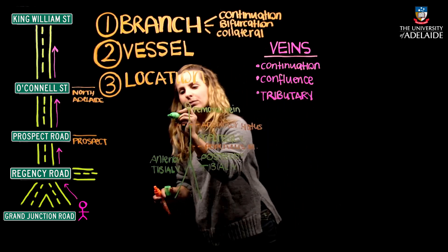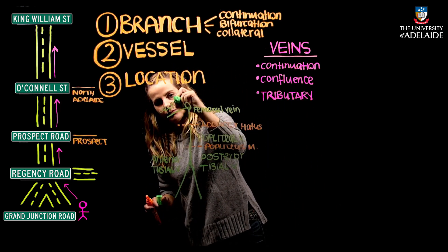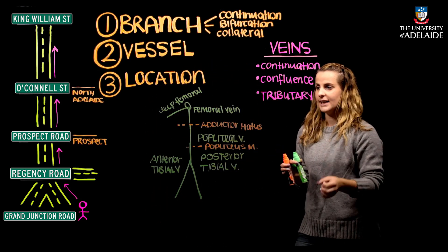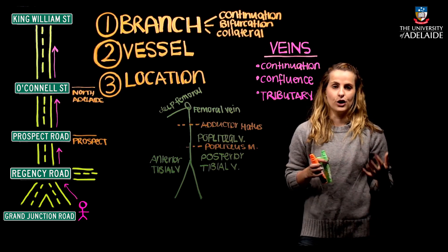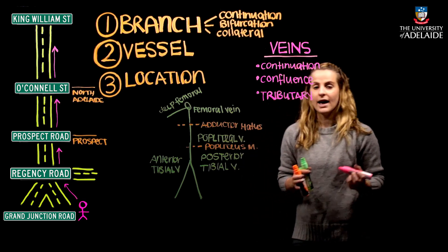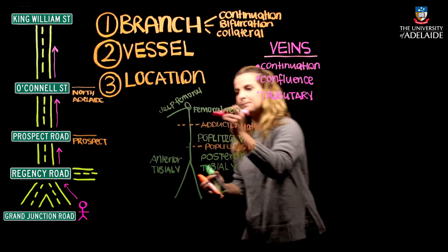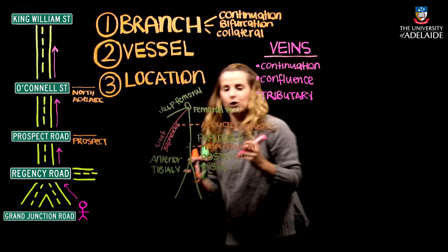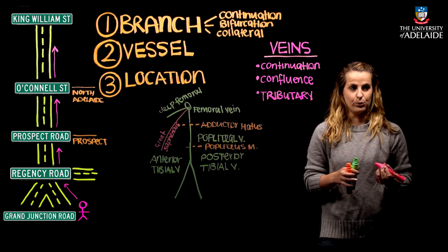Within the femoral triangle we have examples of tributaries. The deep femoral vein is a tributary into the femoral vein at the location of the femoral triangle. We also have a superficial vein — the great saphenous vein — which is also a tributary of the femoral vein.